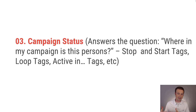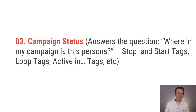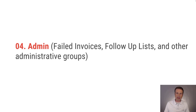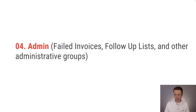Number three is campaign status. These tags have to do with functionality around the campaign builder — answering the question of where is this person in my campaign, or is this tag related to starting, stopping, or looping something in the campaign. Number four is admin-type tags, such as a failed invoice list — just administrative overview tags. This is a good category for those to live in.